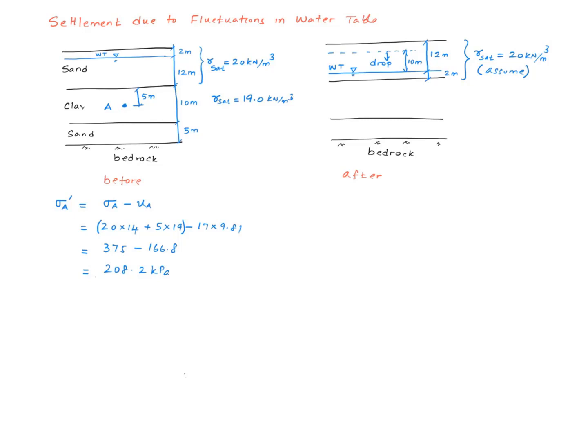Now let's just say that the water table has dropped by 10 meters. So now the water table is right here. And let's assume again, due to capillary action, the total density of this sand layer remains the same, 20 kilonewton per meter cubed.